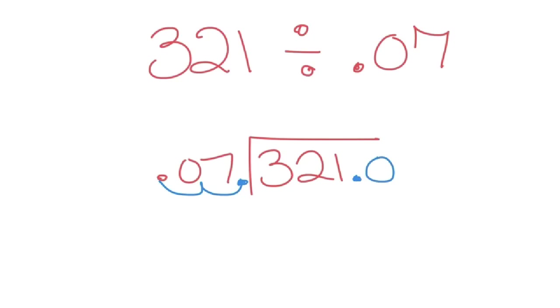So add a decimal. Add two zeros because you need to bump it one, two times. Make your house a little bit longer and bring the decimal straight up to the roof. And now divide like normal. 7 cannot go into 3, so we'll place a 0 there.